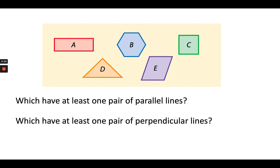Let's take a look at these five shapes and see which ones have at least one pair of parallel lines. Remember, parallel lines are lines that never touch. Looking at figure A, the top and the bottom are parallel lines, as well as the sides — so figure A actually has two pairs of parallel lines. Looking at B, the opposite sides are parallel, and it looks like we have three pairs of parallel lines in B. In C, we have a square, so we know we have at least one pair — we actually have two. And in D, it is a triangle, so all the lines making up the triangle are going to cross, so none of them would be parallel.